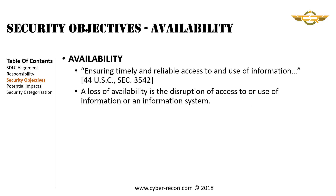Put simply, availability is the ability to access information by authorized people or processes. FISMA defines this as ensuring timely and reliable access to and use of information. A loss of availability is the disruption of access to or use of information or an information system.